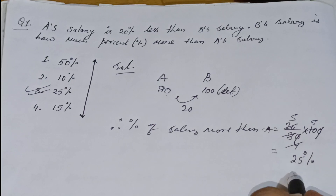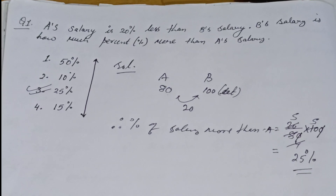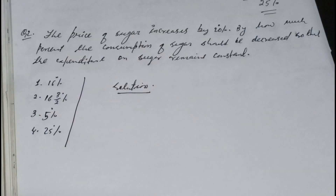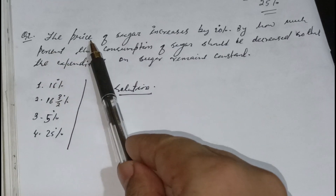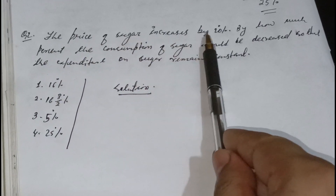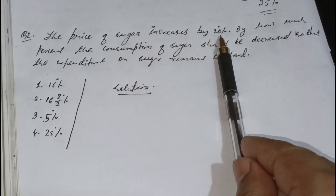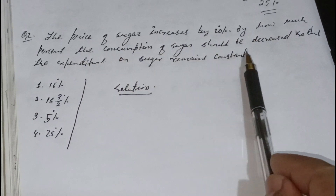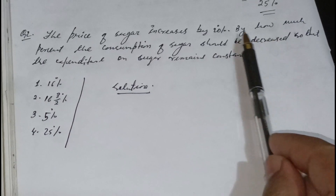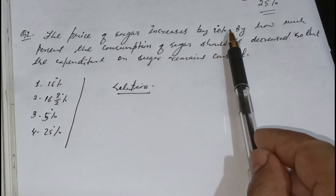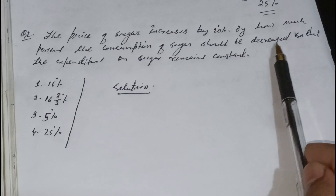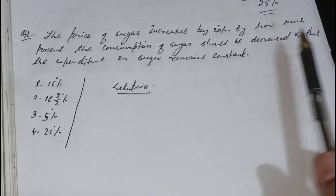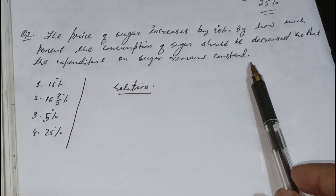If we find the answer using the shortcut, let's go to another question. The price of sugar increases by 20 percent. By how much percent should the consumption of sugar be decreased so that the expenditure on sugar remains consistent?